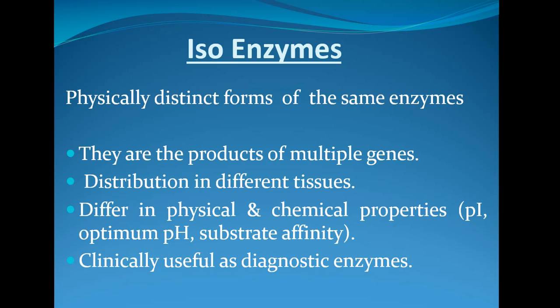Let us discuss about isoenzymes. Isoenzymes means these are physically distinct forms of the same enzyme — the enzyme is the same but they have got different physical forms. So physically distinct forms of the same enzyme are called isoenzymes. They look like twins or triplets — persons looking the same but still having some difference.